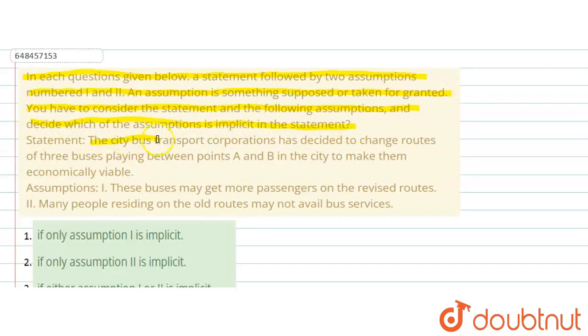Now, the statement is: the city bus transport corporation has decided to change routes of three buses playing between points A and B in the city to make them economically viable.